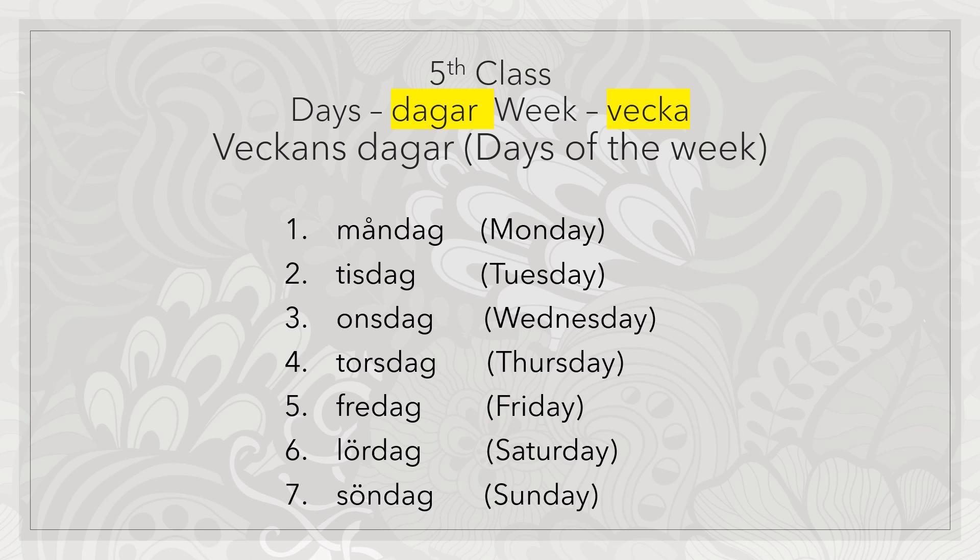One important thing: whenever we speak in the Swedish melody, we ignore the last letter of the words. So Måndag becomes 'Månda', Tisdag becomes 'Tisda', Onsdag becomes 'Onsda', Torsdag becomes 'Torsda', Fredag becomes 'Freda', Lördag becomes 'Lörda', Söndag becomes 'Söndа'. But while writing, we write them as they are — we don't ignore the G while writing, only while speaking.